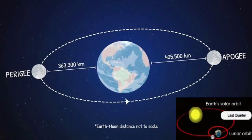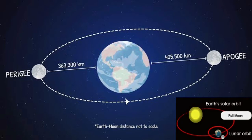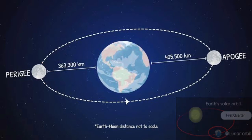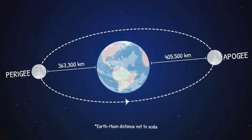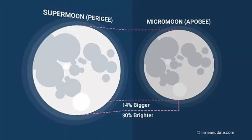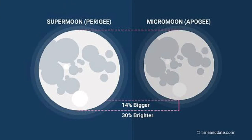The point of the orbit closest to the Earth is called Perigee, while the point farthest from the Earth is known as Apogee. Perigee and Apogee refer to the distance from the Earth to the moon.